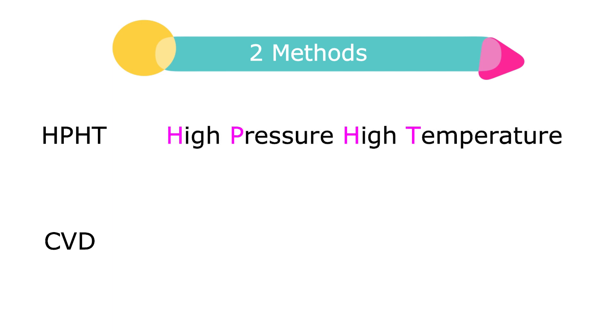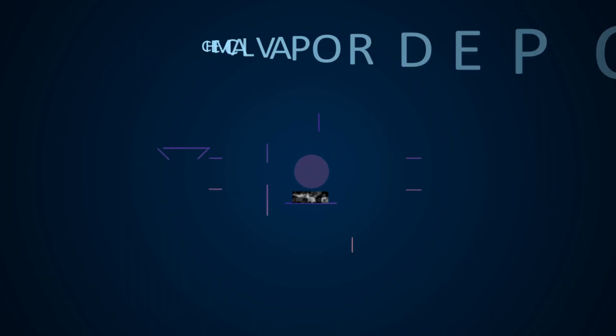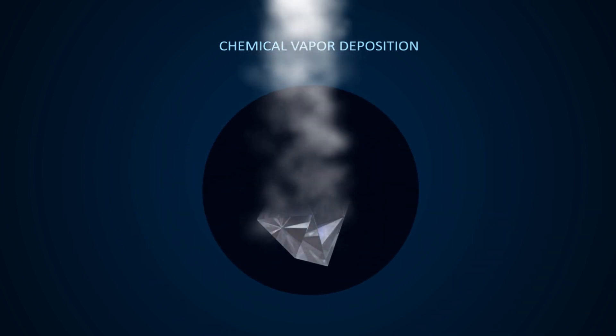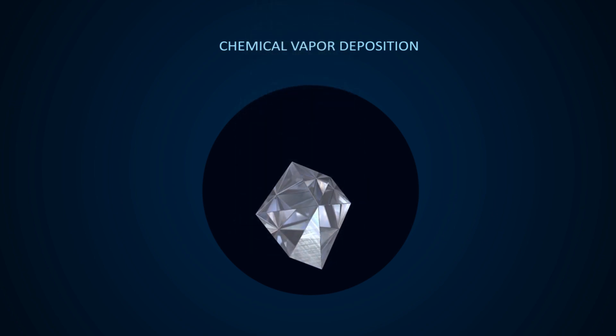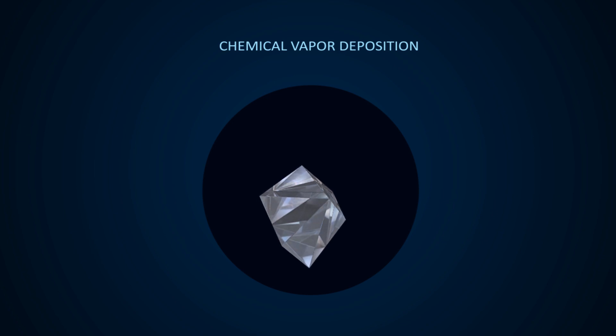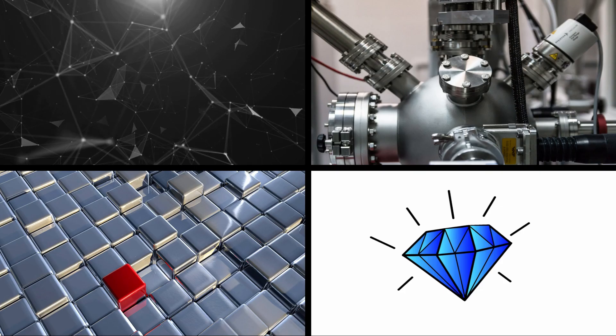CVD is short for chemical vapor deposition and describes a method in which diamond is grown layer by layer within a plasma. No high pressure is needed. Instead, a seed diamond is used to bind one carbon atom to another which ultimately turns the small diamond seed into a bigger stone. In order for the reaction to happen and the diamond to grow, the gas needs to be heated and turned into a hot plasma. Both production methods use diamond seeds and the growth process usually takes between a few weeks to months.